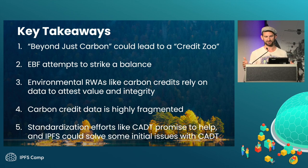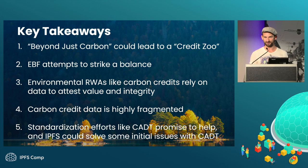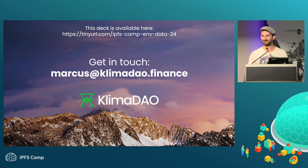Some takeaways: the 'beyond just carbon' catchphrase could easily lead us to a credit zoo where all credits are different and there's no standardization, creating confusion for buyers. The Ecological Benefits Framework is trying to strike a balance at the meta level, but there's a lot of work to turn EBF from a set of ideas into an actionable, implementable framework. Environmental RWAs like carbon credits rely on data to derive their value — without trusted and verifiable underlying data, carbon credits themselves have no value. That carbon credit data is highly fragmented, and there's a lot of work to standardize it and create an integrated data platform. Efforts like Climate Action Data Trust are underway, but there's an opportunity to help them build on more decentralized storage formats more familiar to the broader industry than Chia Network. Happy to take any questions or feel free to get in touch.